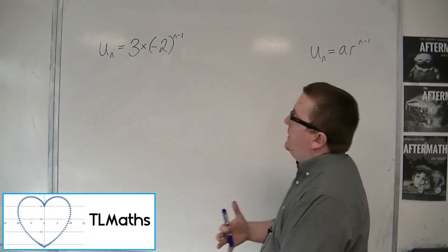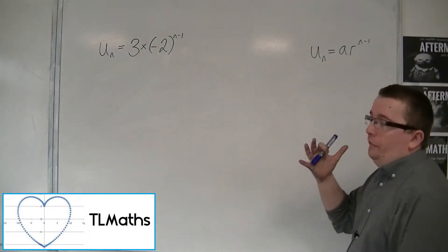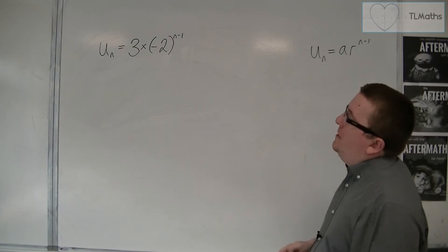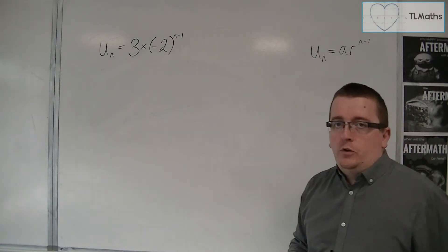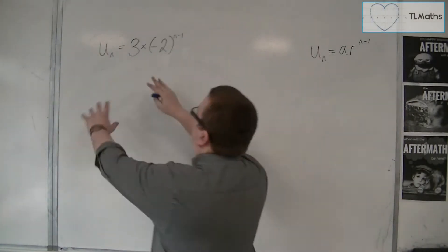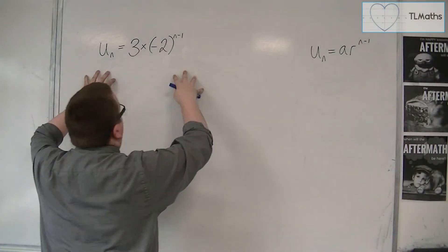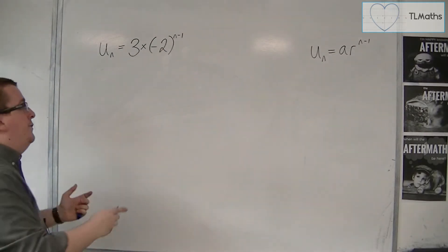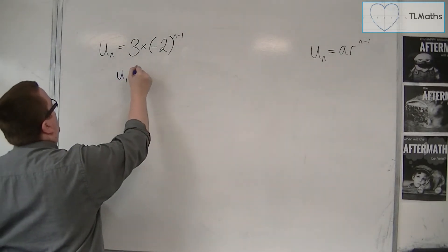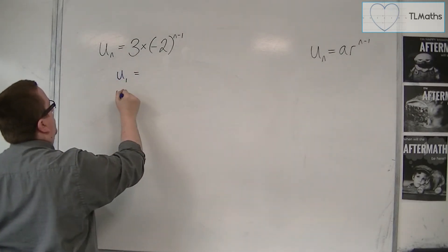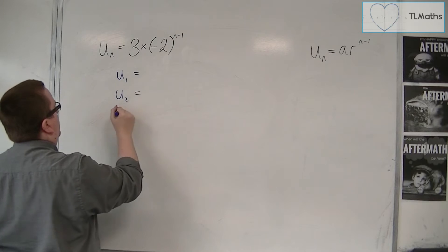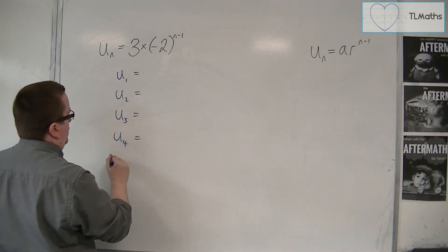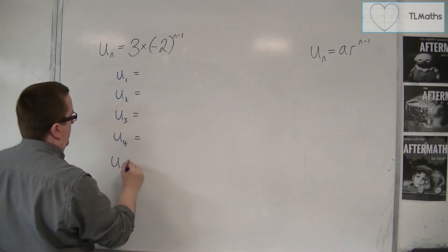Let's say I want to write down the first five terms of this geometric sequence. So this is the nth term that has been given to me, and I need to find u1, u2, u3, u4, and u5.